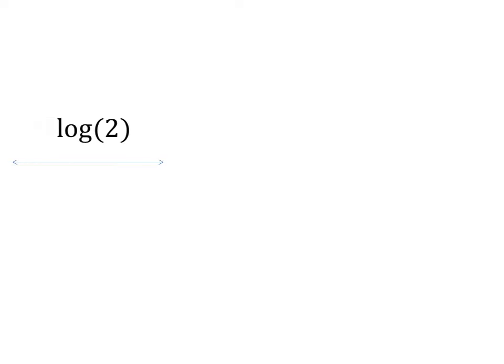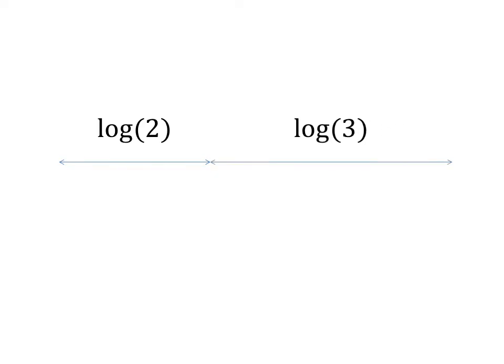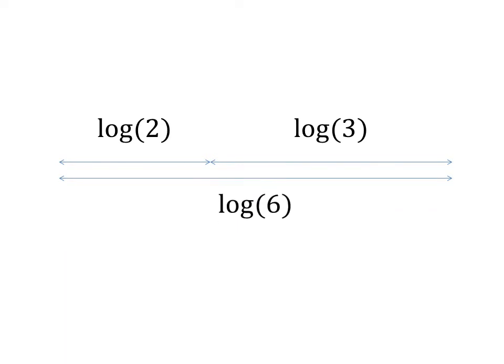This illustrates the same concept graphically. The first line represents the logarithm of 2. The second line represents the logarithm of 3. The third line represents the summation of those two logarithms, and is also equal to the logarithm of the product of 2 and 3.